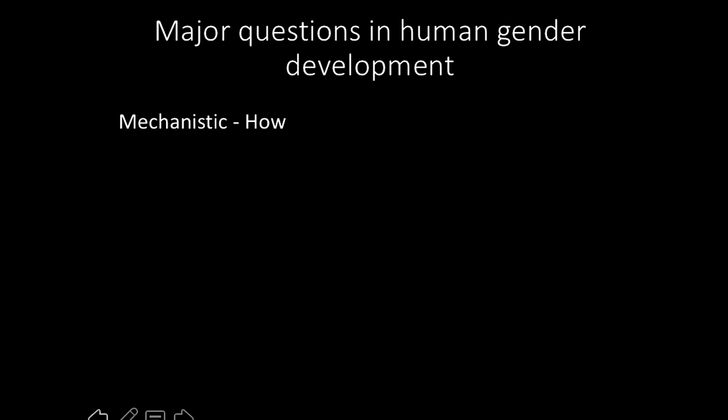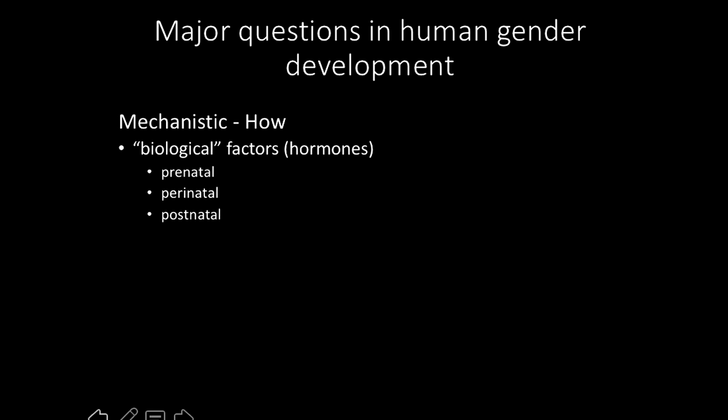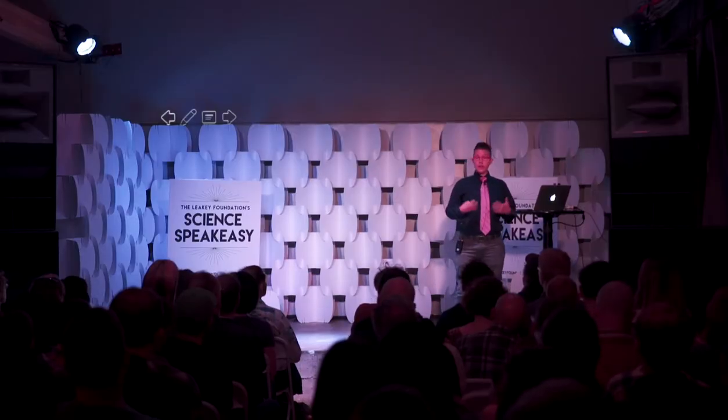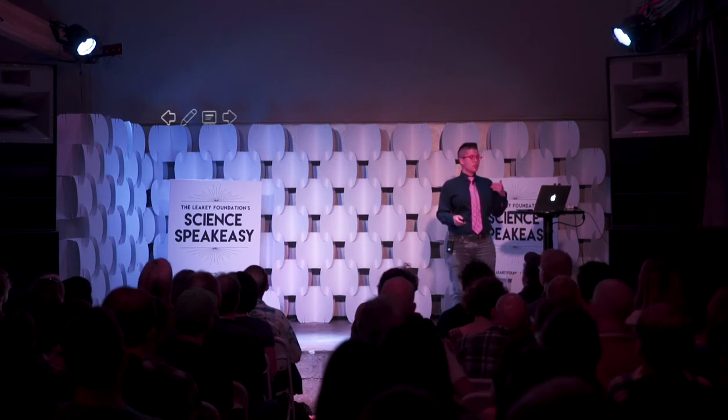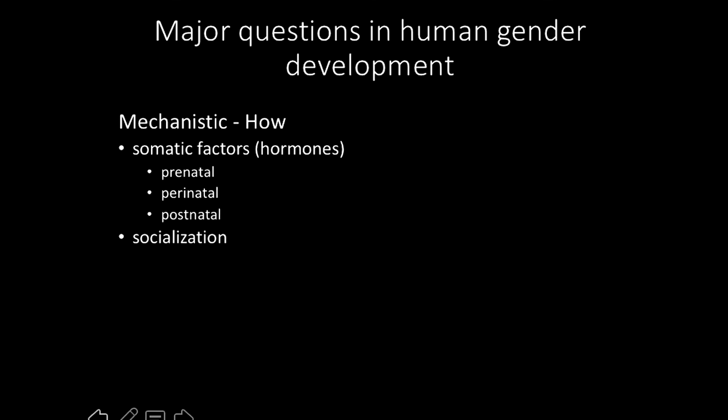Let's talk briefly about the human data, because not surprisingly the mechanisms of human gender development have been subject to a lot of research. People interested in innate tendencies focus on what some call biological factors — usually hormones expressed in the prenatal, perinatal, and postnatal periods. I don't really like to call those biological factors, since we are social animals and our social behavior is every bit as much a part of our biology as our bodies. I prefer to call these somatic factors, derived from the body or soma. There's also been a lot of research on socialization from parents and peers.